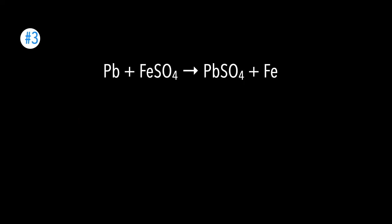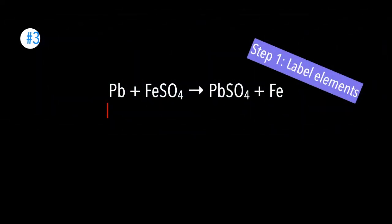Problem number three. We have the following: Pb plus FeSO4 gives you PbSO4 plus Fe. Step one is to label all the elements going from left to right. So we're going to label lead as A, iron as B, the compound sulfate as C. We're going to go on to the right side and transfer the variables. So we're going to label lead as A, sulfate as C, and iron as B.